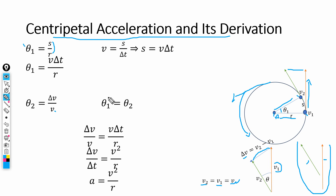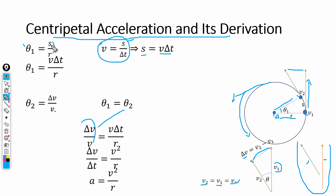Since theta₁ = theta₂, we can equate their expressions: Δv / v = s / r. The arc length s is the distance traveled during time Δt. From the definition of velocity, displacement s = v · Δt. Substituting, we get Δv / v = v · Δt / r.